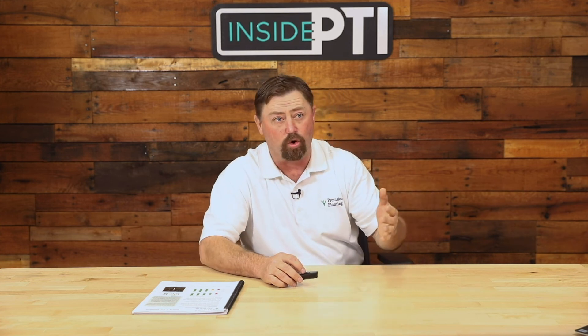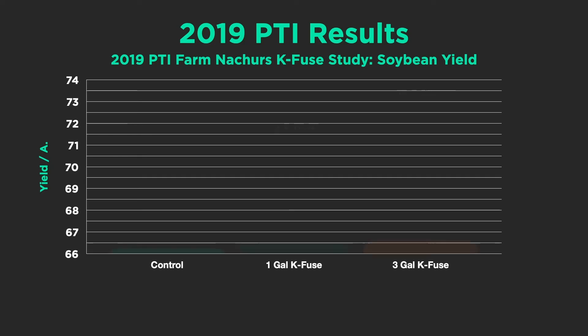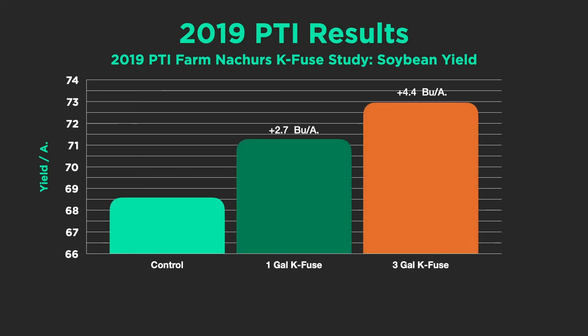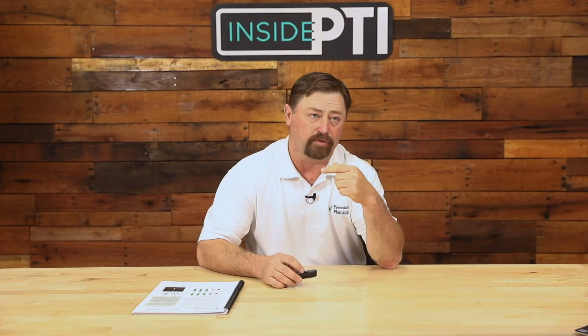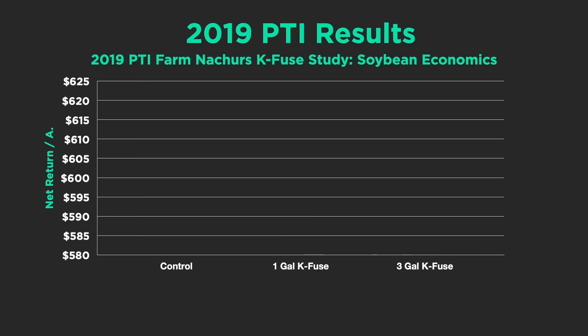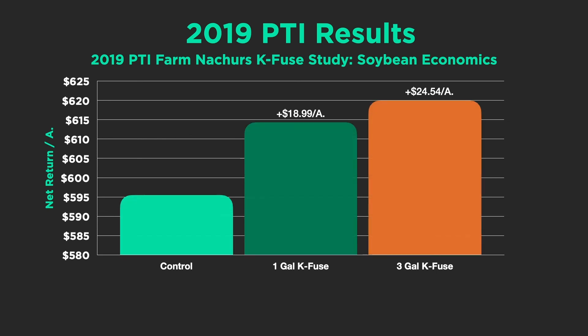We're also using K-Fuse on soybeans. At lower rates of one to three gallons per acre, the 2019 results show 2.7 to 4.4 bushel increases on soybeans with this potassium product. Taking ROI into account, we're again close to $20 per acre net return on soybeans as well.